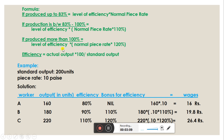The formulas are: up to 83% efficiency — level of efficiency × normal piece rate. Between 83% and 100% — level of efficiency × normal piece rate × 110%. Above 100% — level of efficiency × normal piece rate × 120%. Efficiency is calculated as: (actual output ÷ standard output) × 100. Example: standard output = 200 units, piece rate = ₹0.10. Worker A produces 160 units, giving an efficiency of 80%.